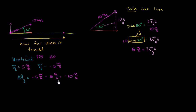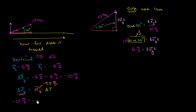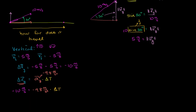So how do we use this to figure out how long it's in the air? We know that our change in vertical velocity equals our acceleration in the vertical direction times the change in time. Our acceleration in the vertical direction is the acceleration due to gravity, which is negative 9.8 meters per second squared. So negative 10 meters per second equals negative 9.8 meters per second squared times our change in time. To find the total time in the air, we divide both sides by negative 9.8 meters per second squared.